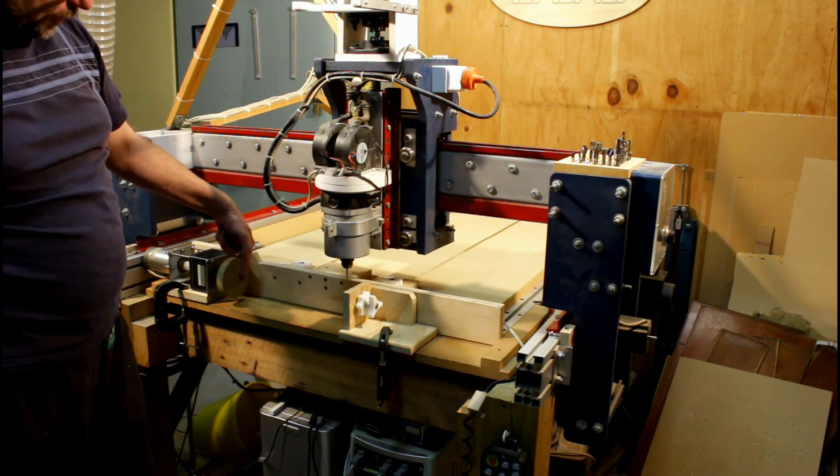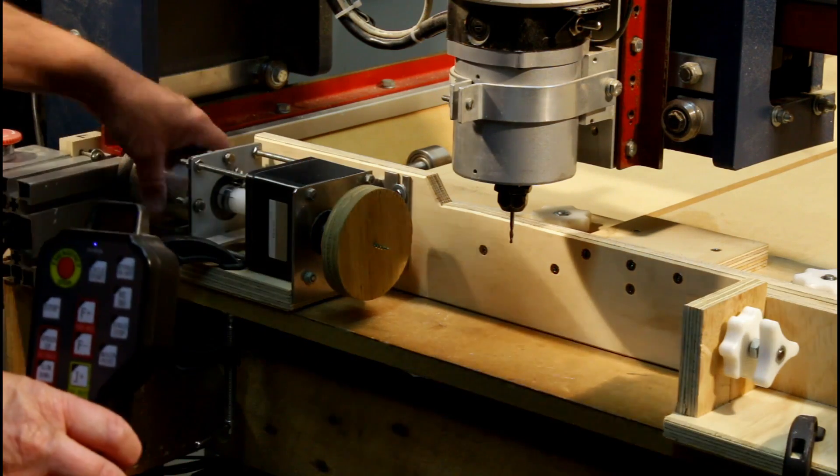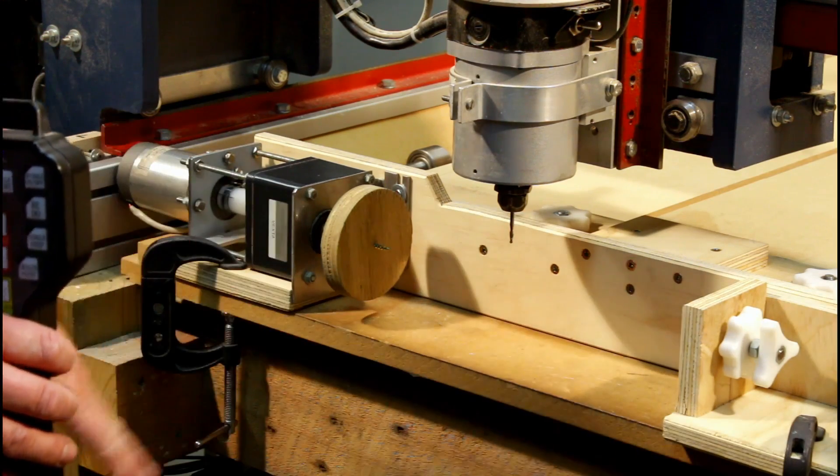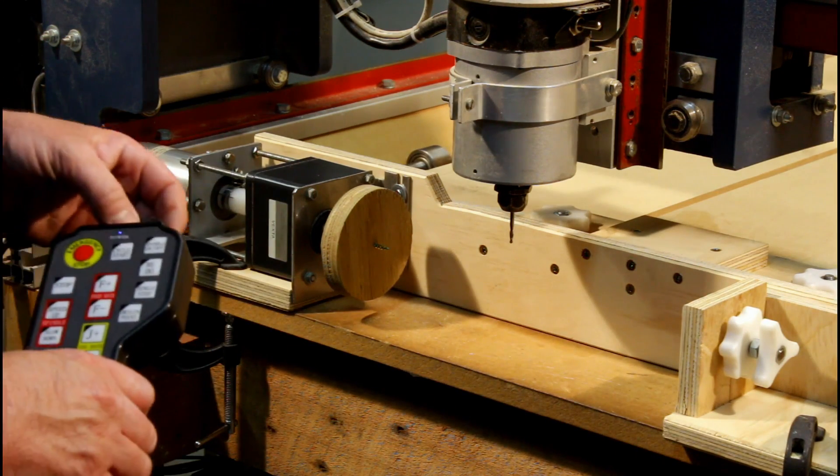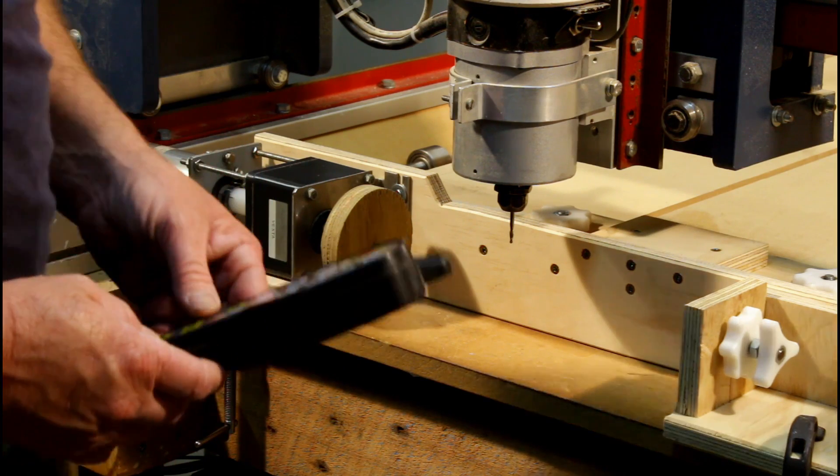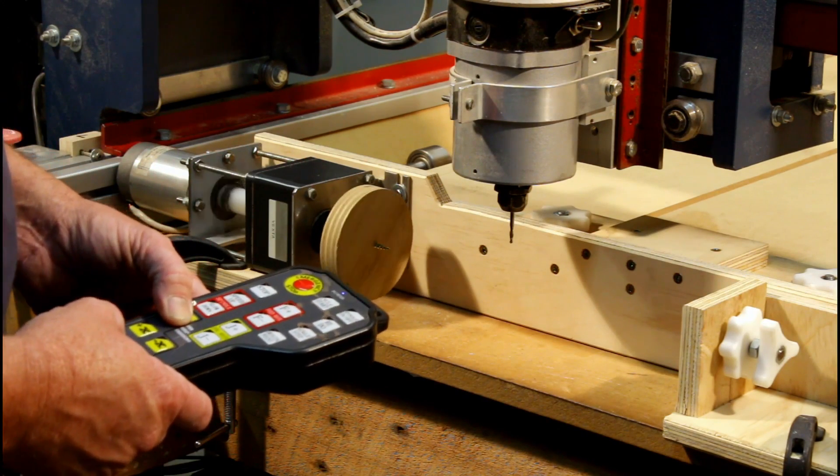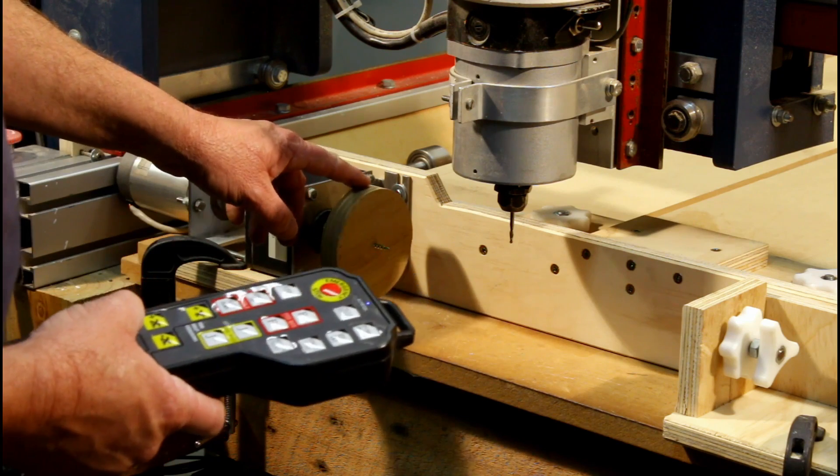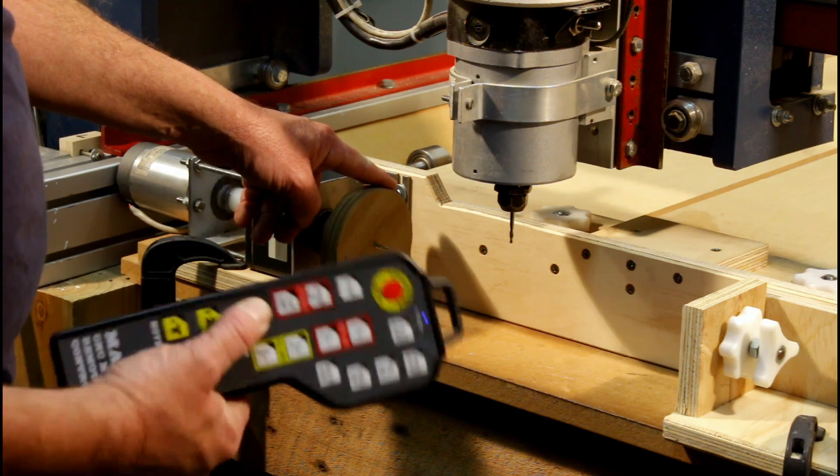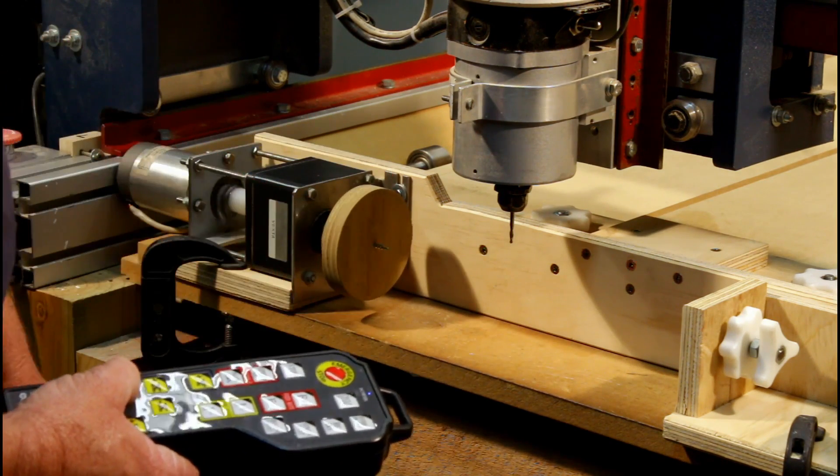One thing I like about the Gecko G540 is that the resistor that sets the current for this particular motor is actually in the plug that I plugged into the drive, that saves a whole lot of hassle. I've created a brand new profile in Mach3 for a rotary axis and it allows me to just simply use the Y keys on my control here to rotate the axis.